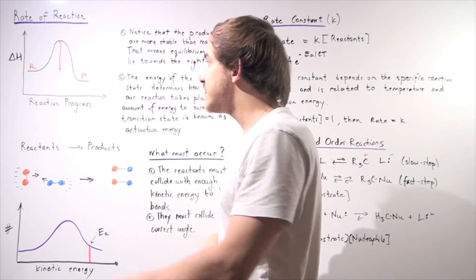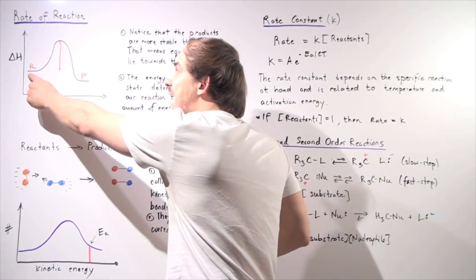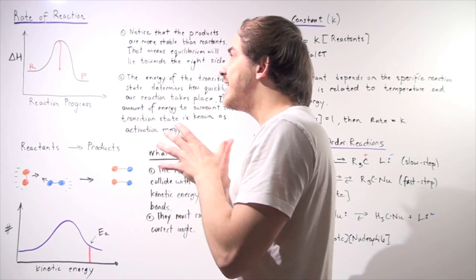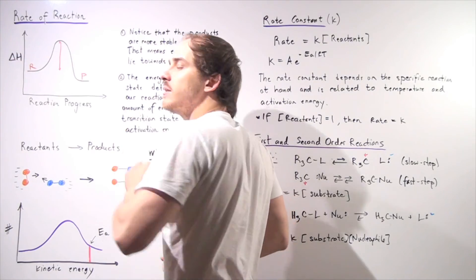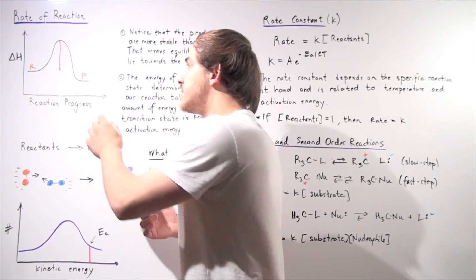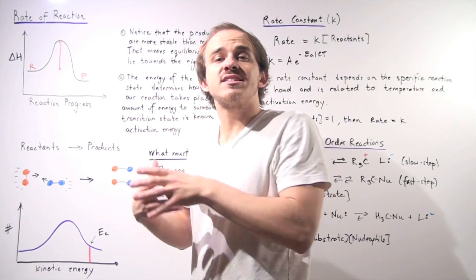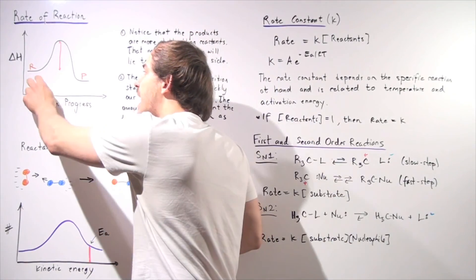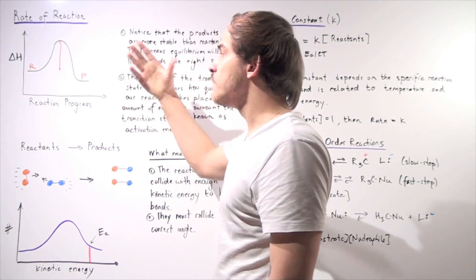If we take products and subtract reactants from products, we get a negative delta H. That means our bonds in the product are more stable than the bonds in reactants, and because they are more stable...